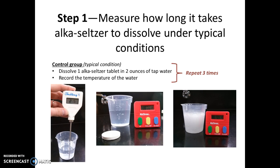Because most of the glassware you use in lab — the beakers and graduated cylinders — measure volume in milliliters, for this experiment we want you to use plastic beakers like you can see in these pictures. The plastic beakers measure volume in both milliliters and fluid ounces, and you can use these to measure out your two ounces of tap water for your control group.